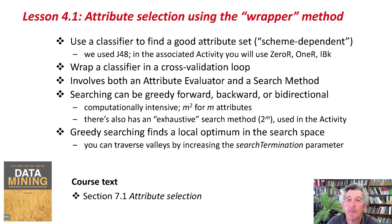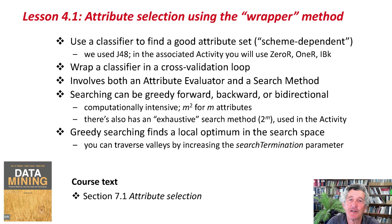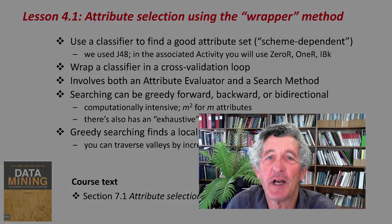So that's attribute selection using the wrapper method. We use a classifier — we used J48 — to find a good attribute set, wrapping it in a cross-validation loop. There are two components: the attribute evaluator, which evaluates a subset of attributes, and the search method, which searches through the attribute space. Searching can be forwards, backwards, or bidirectional, starting from any kind of subset. It's computationally intensive — m-squared subsets need to be evaluated for m attributes. There's also an exhaustive method evaluating 2-to-the-m subsets, which you'll use in the activity. Greedy searching always finds a local optimum; you can traverse valleys by increasing the search termination parameter. Read the relevant section in the course text, do the activity, and we'll see you in the next lesson. Good luck and bye for now!